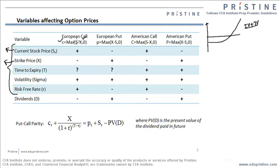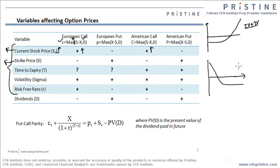The formula for the intrinsic value is dependent on the strike price and the current stock price. If you see this formula, as the stock price increases or as the underlying price increases, the value of the call option will increase. Same holds true for American call as well. Now, if you see the payoff for a put option, we can conclude that as the underlying price decreases, the value of the put will increase. So intrinsic value for the put would be max of X minus S comma 0.